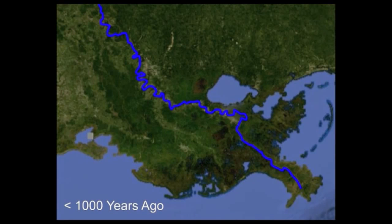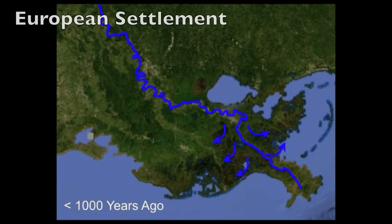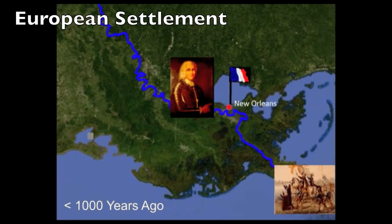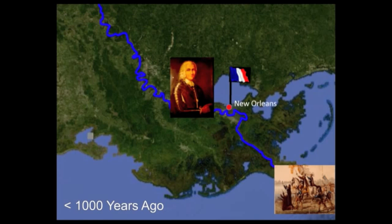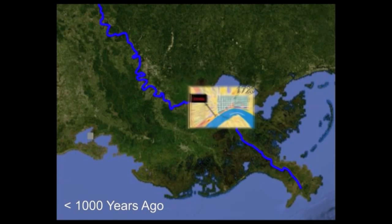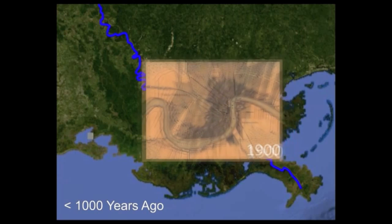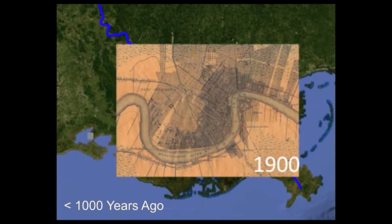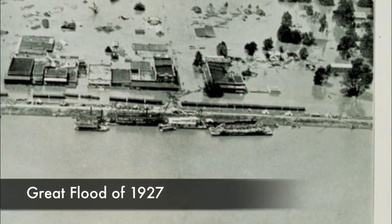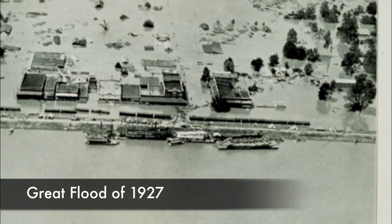The river periodically overflowed its banks each spring, delivering sediments to the coastal marshes and swamps. Then Europeans arrived on the scene and established New Orleans in a bend of the Mississippi River. To prevent flooding of New Orleans, levees were built, and these were extended as the city grew.